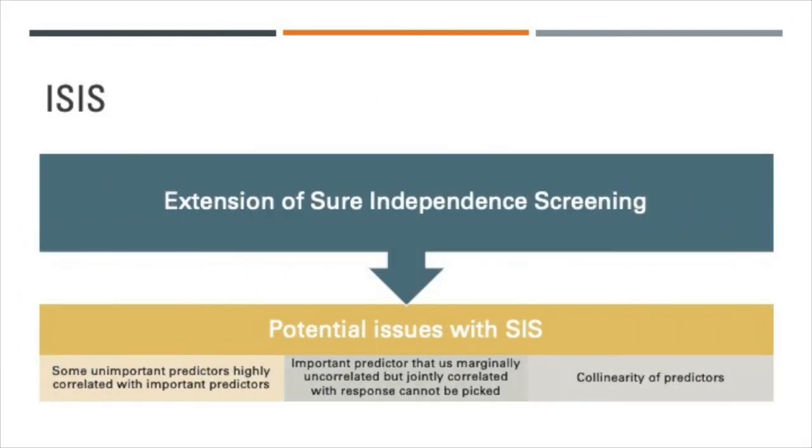So despite the numerous benefits of carrying out SIS, it does have some pitfalls. The first problem is that some irrelevant predictors that are strongly correlated with important predictors may have a higher priority in being selected by SIS over important predictors that have a weaker association to the response. Second, an important predictor that is marginally uncorrelated with other variables but jointly correlated with the response cannot be chosen by SIS and hence will never be utilized in the final model. Third, executing SIS brings about the issue of collinearity between predictors, which increases the difficulty of the variable selection problem.